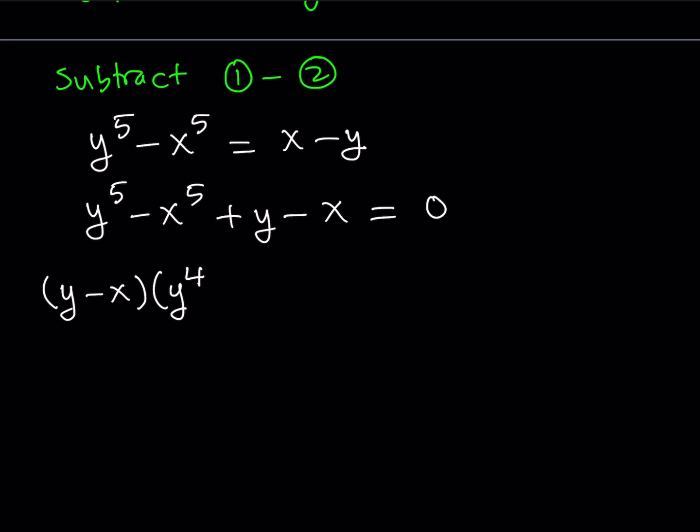And then since the first term is negative and the original is a minus sign, everything in the second factor is going to be positive. So we're going to get something like this: y^4 + y^3*x + y^2*x^2. Notice that the powers of y are going down and the powers of x are going up. So they're kind of switching around plus x^4.